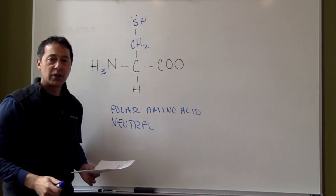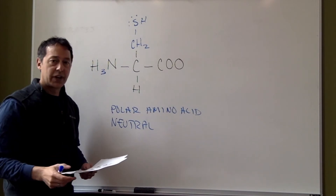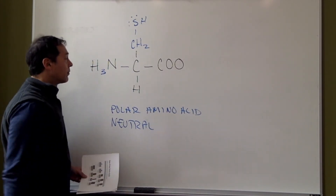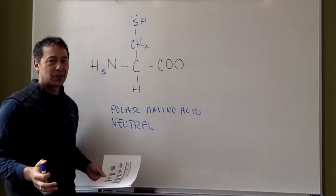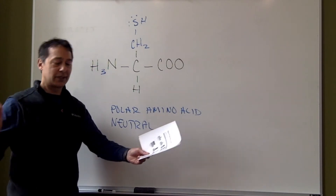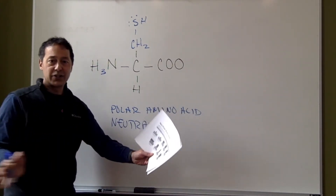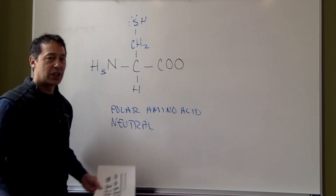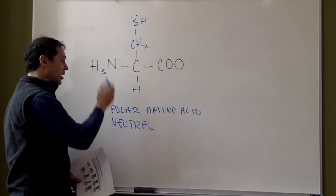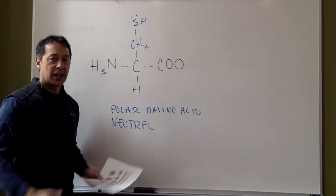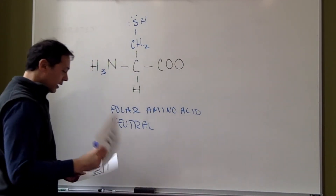You might be scratching your head going, wait — earlier you showed us one with sulfur that wasn't polar neutral. Well, that one is kind of a little bit polar. From polar to nonpolar there are different areas of gray. If you recognize electronegative elements and call it polar, that's fine. So those are our polar neutral ones.